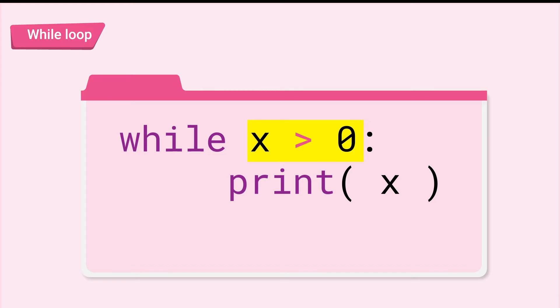When this condition is met or is true, then the code inside it will execute. After the condition, don't forget the colon to create a code block. Now let's insert the instructions that will repeat. Here, let's insert print x.